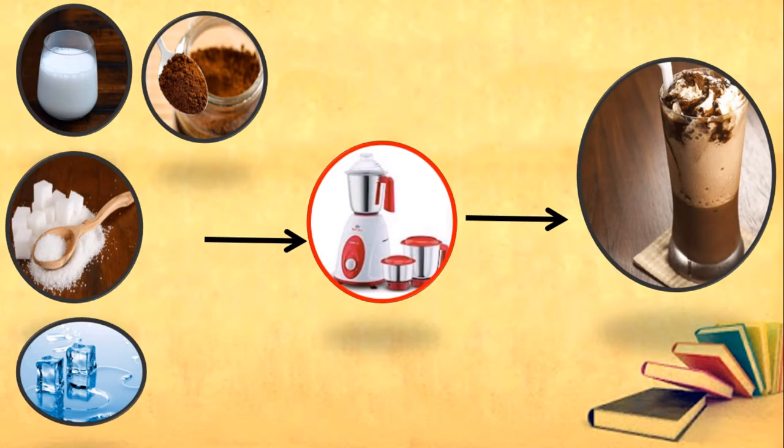The coffee is ready. In this example, milk, coffee, sugar, and ice are input; the process of mixing these ingredients is processing; and the cold coffee is output. A computer also follows a set of instructions in a step-by-step manner. It takes input from the user, processes the input, and provides the output accordingly. This is known as the IPO cycle.